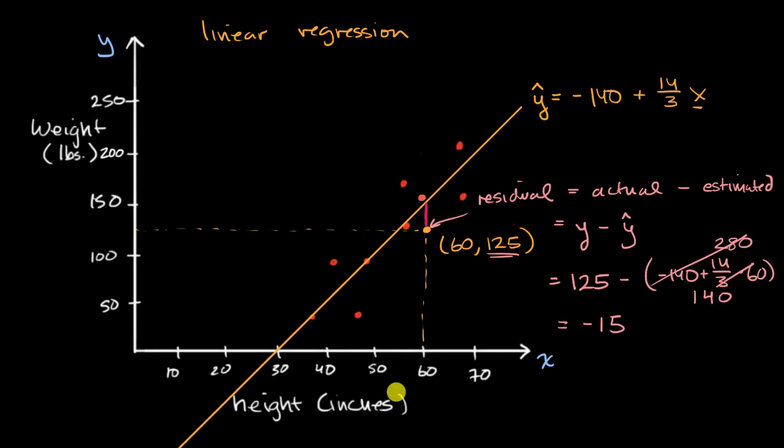And residuals indeed can be negative. If your residual is negative, it means for that x value, your data point, your actual y value is below the estimate. If we were to calculate the residual here, or if we were to calculate the residual here, our actual for that x value is above our estimate, so we would get positive residuals.